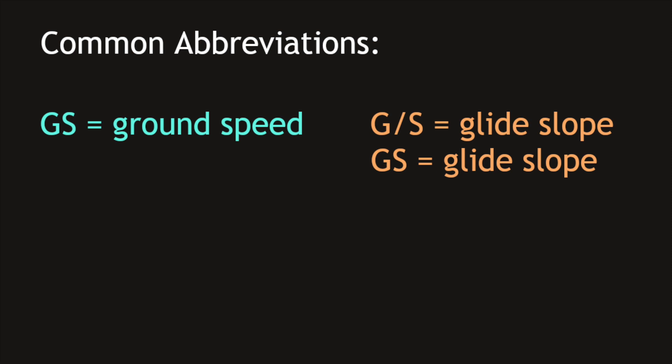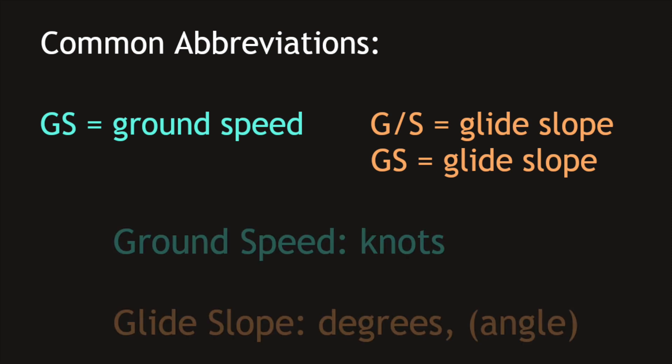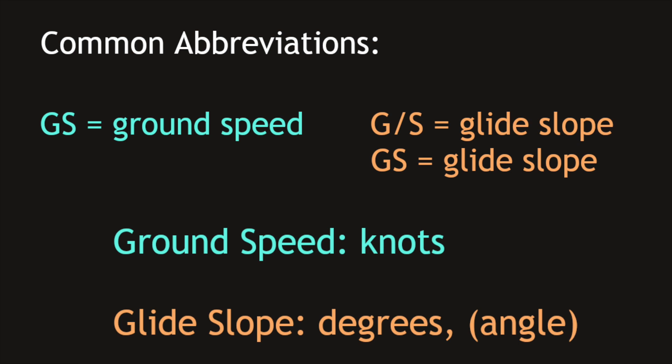The term glide slope is sometimes abbreviated as G/S. However, this is not always consistent and there will be occasions where you may find glide slope represented also as GS, like ground speed. Don't worry, because when these abbreviations are put into context, it will be quite clear whether you are looking at ground speed or glide slope information.